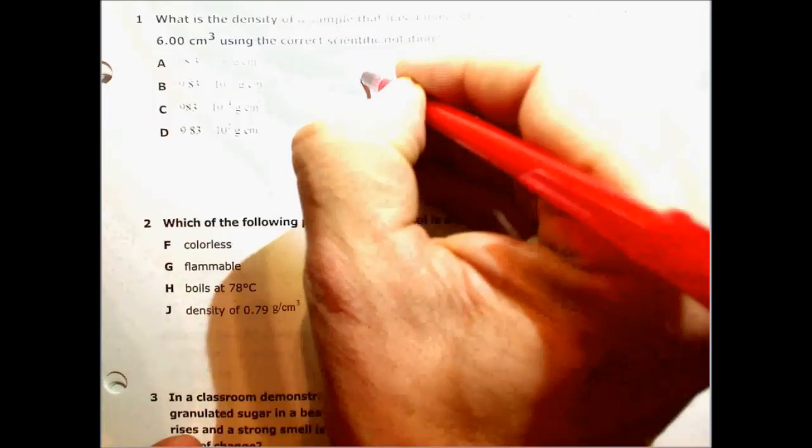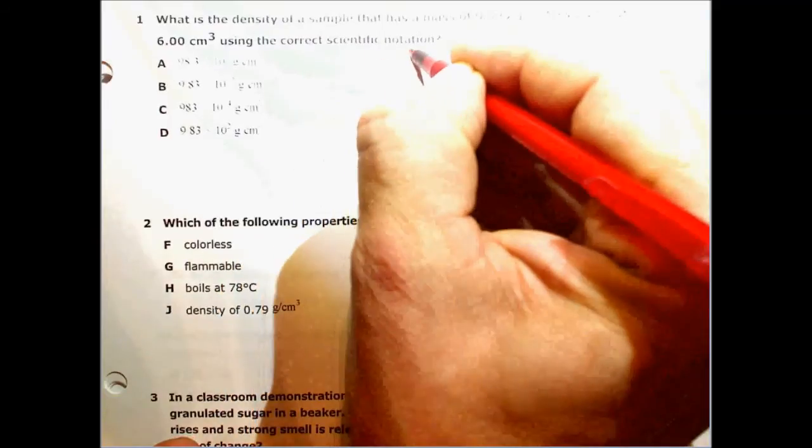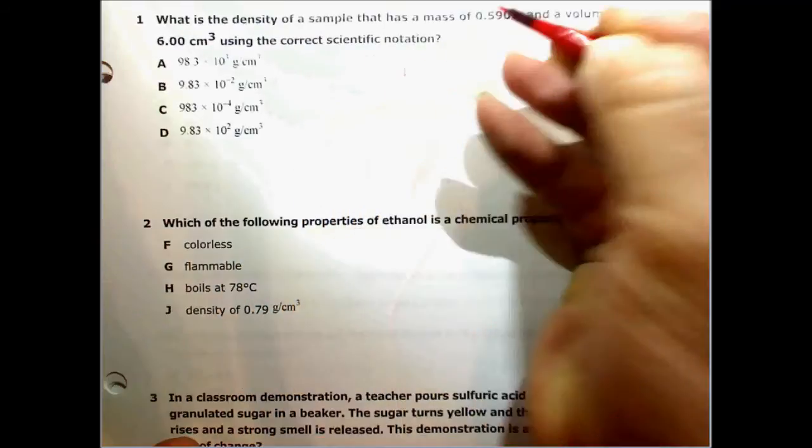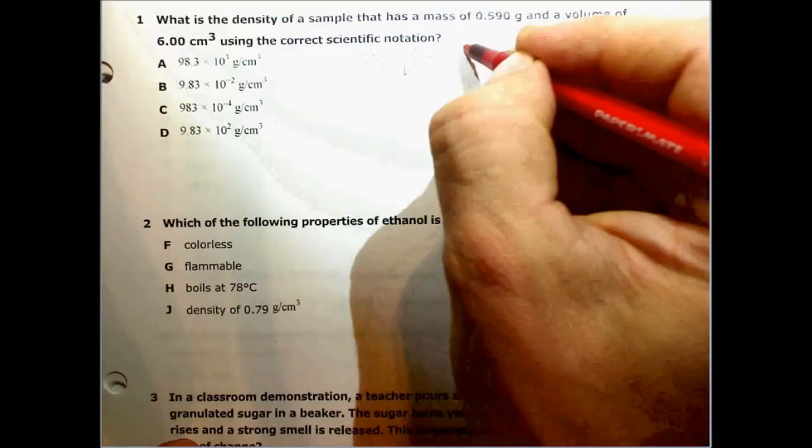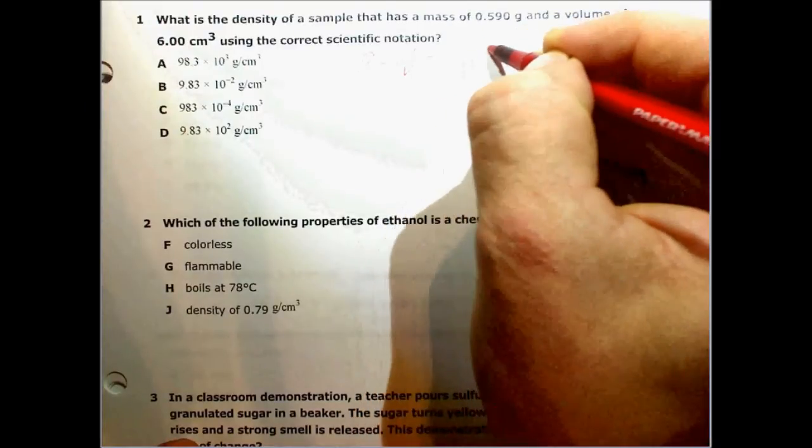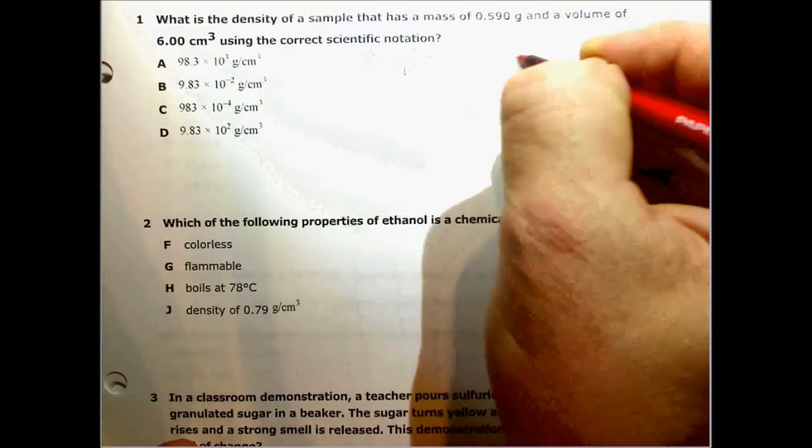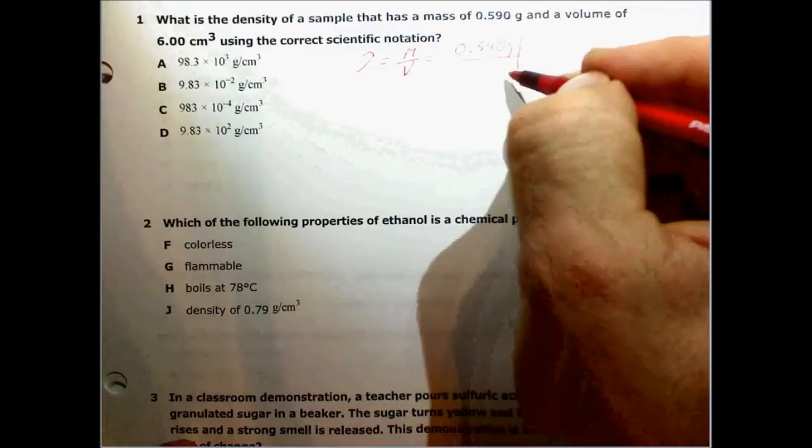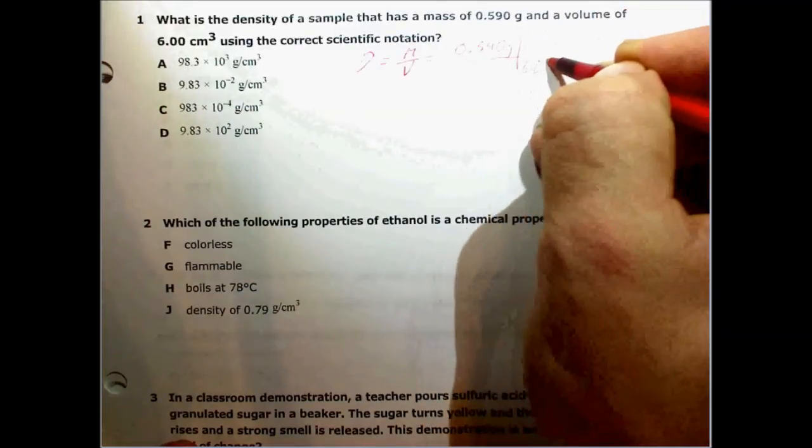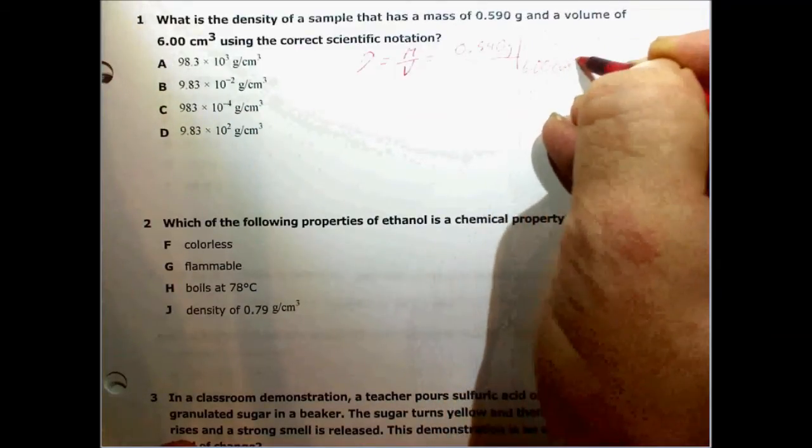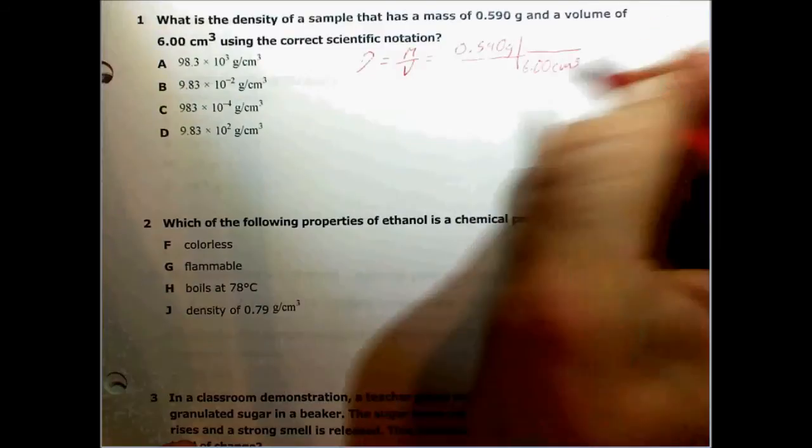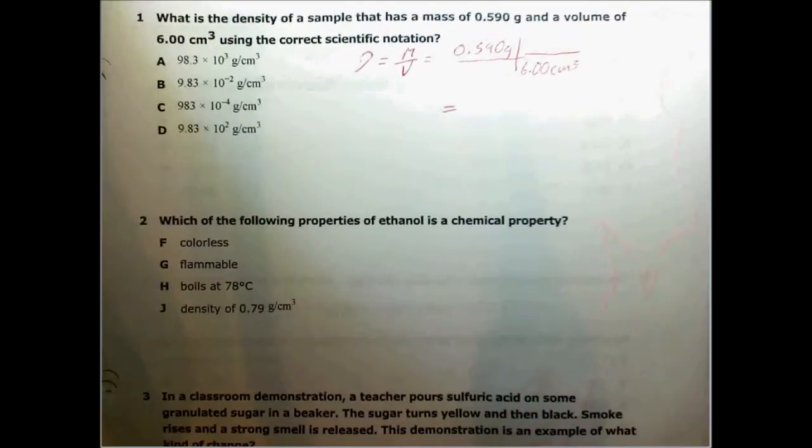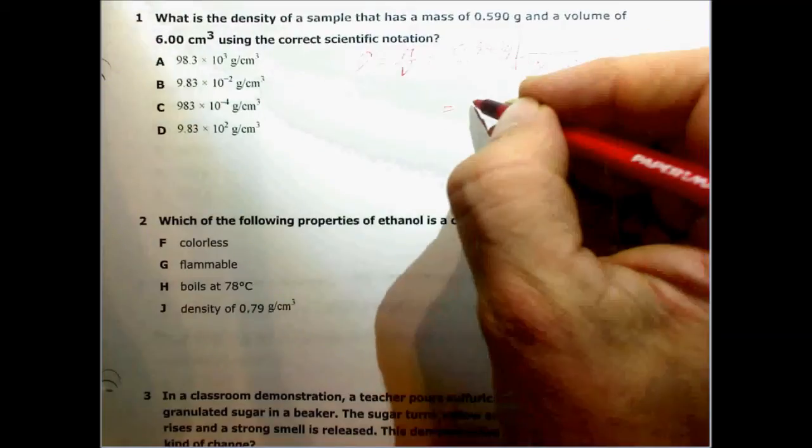We know the density is equal to the mass divided by the volume, so it's going to be equal to 0.590 grams divided by the volume of 6.00 centimeters cubed.